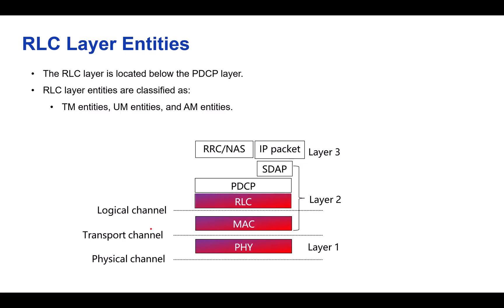Looking at where RLC sits in the protocol stack: RLC is a middleman, as the RLC layer sits in the middle of the 5G protocol stack. It acts as a bridge between the PDCP layer and the MAC layer. RLC is a Layer 2 protocol, meaning it directly handles organizing data into frames for transmission.